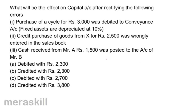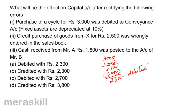Purchase of a cycle for Rs. 3,000 was debited to conveyance account. When we rectify, profit will go up and capital will be credited by Rs. 3,000. But depreciation had to be charged at Rs. 300, so net effect is credit to capital Rs. 2,700. Credit purchase of goods from X wrongly entered in sales book — when rectified, sales cancelled Rs. 2,500 and purchase added, overall reduction in profit by Rs. 5,000, debit to capital Rs. 5,000. Cash received from Mr. A posted to Mr. B makes no difference. So 2,700 minus 5,000 equals minus 2,300 — debit to capital account. Correct answer A: debited with 2,300.